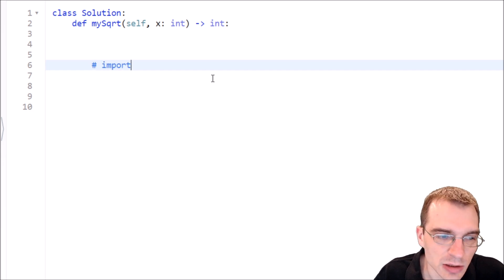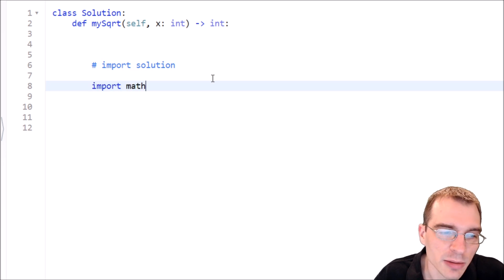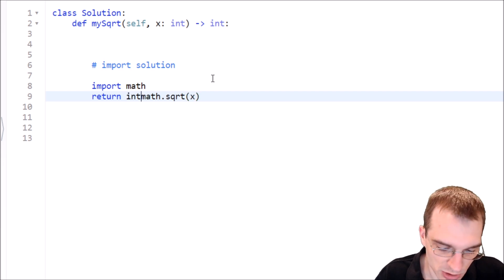Like for one, we could say import solution. All you have to do is import math to gain access to the square root function, then return math.sqrt of x. That should be an easy working solution, but of course we need to also do int of that since the problem called for rounding to the nearest integer. That should strip off the decimals and just return the int portion of it. Let's go ahead and submit that one.